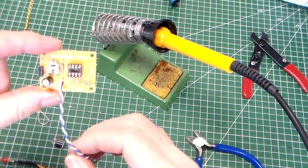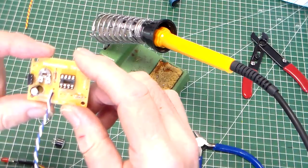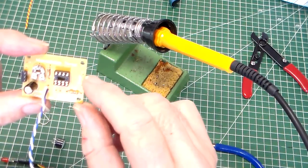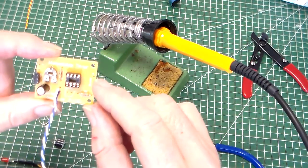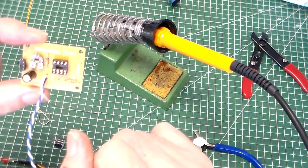Welcome to part 5 of the timer project. This time we're going to be fitting the two output components, which are the buzzer and the LED.